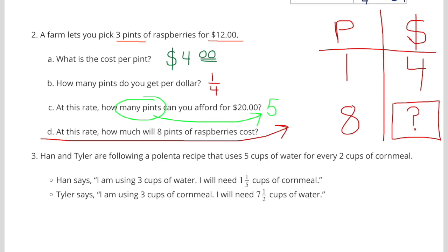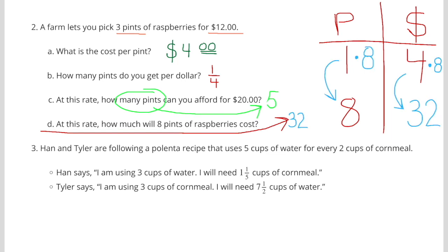D. At this rate, how much will 8 pints of raspberries cost? Well, if 1 pint costs $4, 8 pints is going to cost 8 times that. So 1 times 8 is 8, and 4 times 8 is 32. 8 pints of raspberries would cost $32.